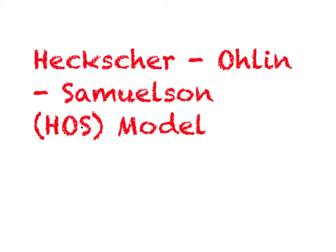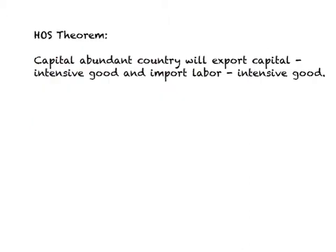In the previous two lecture videos, we have looked at the HOS model or the Heckscher-Olin-Samuelson model. The HOS model tells us that a capital abundant country will export the capital intensive good and import the labor intensive good. We have looked at this from a theoretical perspective and we know that the HOS model makes logical as well as intuitive sense.